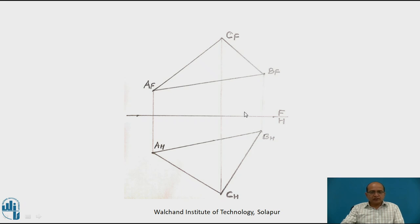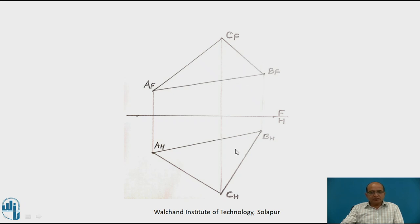Let us study finding the true shape of the triangular plane. Suppose the given figure is plane ABC — a scalene triangular plane shown in two locations: one as a front view and the other as a top view. The front view is indicated with points AF, BF, and CF because points are taken on the frontal plane, according to the first angle projection method. The bottom figure indicates the top view with points AH, BH, and CH, as points are taken on the horizontal plane.